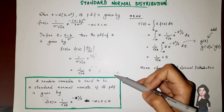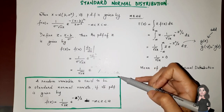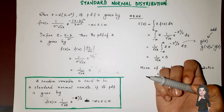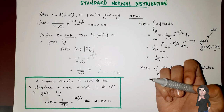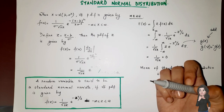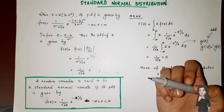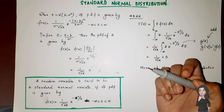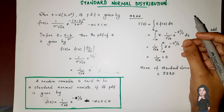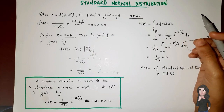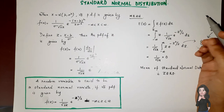Where z takes values from minus infinity to plus infinity. So this is the formal definition of a standard normal distribution or standard normal random variable. A random variable is said to be a standard normal variable if its PDF is given by f(z) = 1/√(2π) × e raised to minus z²/2, where z is from minus infinity to plus infinity.